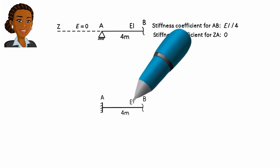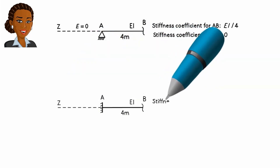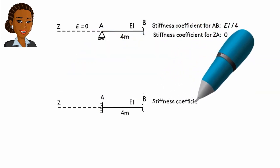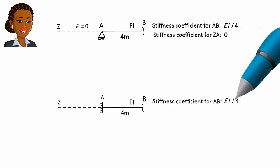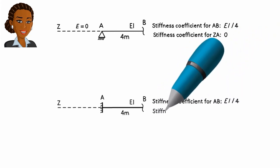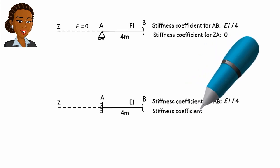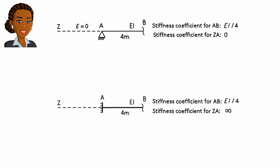For a fixed support, like a rigid wall, the stiffness is assumed to be very large, large enough to prevent any movement of the structure at that joint. Therefore, we could assume a stiffness coefficient of infinity for our imaginary member.